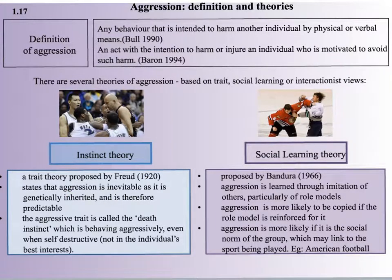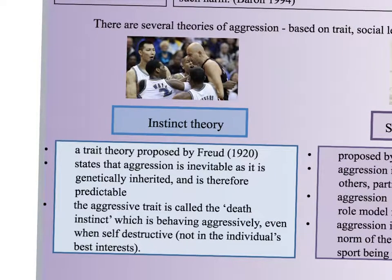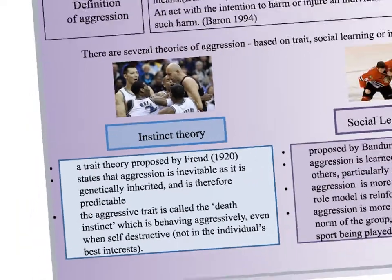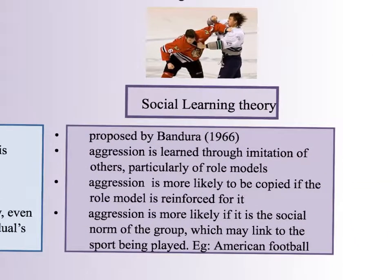The instinct theory is proposed by Freud in 1920 and states that aggression is inevitable as it is genetically inherited and therefore predictable. The aggressive trait is called the death instinct — the idea that we are born to kill, we are hunters, and it is our survival instinct to be aggressive. This means behaving aggressively even when self-destructive, i.e., not in the individual's best interests. The instinct theory, backed by the trait theory, holds that we are born with our aggression.